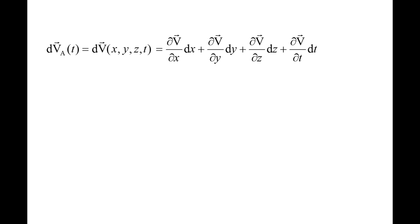The full derivative of the velocity from the Eulerian point of view is: partial v partial x dx, plus partial v partial y dy, plus partial v partial z dz, plus partial v partial t dt.